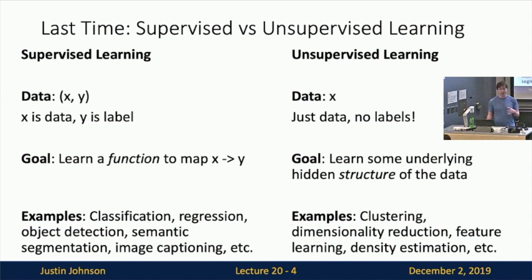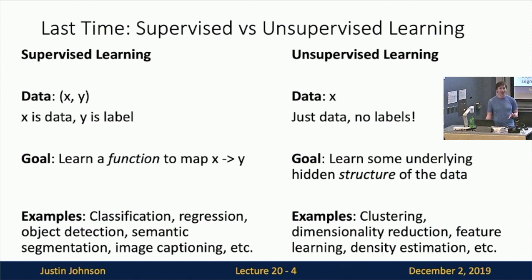Unsupervised learning has no labels, just data, and somehow our goal is to learn some underlying structure of the raw data even without any human-provided labels. This would be awesome because you can go out on the internet and download tons of data, and if we could do unsupervised learning in the right way, our models can just get better and better. This is one of the holy grail challenges in machine learning, and generative models push in that direction.